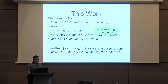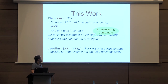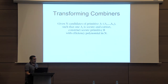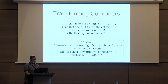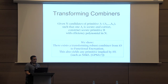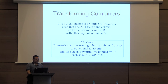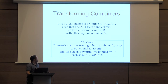This gives rise to the notion of transforming combiners: you start with candidates of one primitive (IO) and get another primitive (FE). Formally, given N candidates of primitive A where only one is guaranteed to be both secure and correct, is it possible to construct a secure instantiation of primitive B with polynomial loss? We show there exist robust transforming combiners from IO to function encryption, and using results from 2017 this also yields primitives implied by FE, such as non-interactive key exchange.